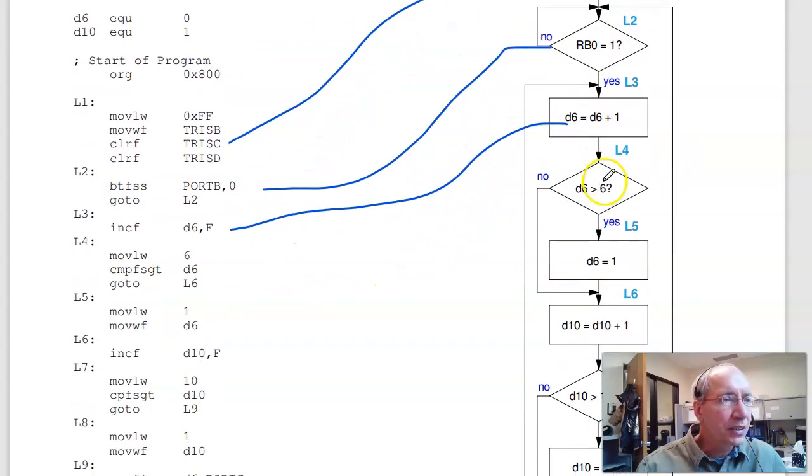Increment D6, put the result in D6. Move 6 to W. Compare skip if greater than. If it's greater than, I skip out. Otherwise, jump to label 6.